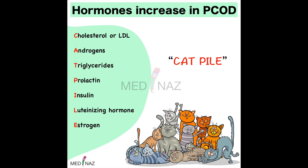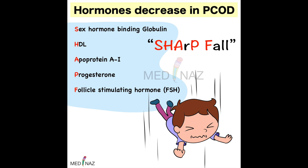Now two mnemonics to remember the hormonal changes in PCOD. First one is for hormones which increase in PCOD. The mnemonic is CAT-PILE. Follow the red letters: C for cholesterol or LDL, A for androgens, T for triglycerides, P for prolactin, I for insulin, L for luteinizing hormone and E for estrogen.